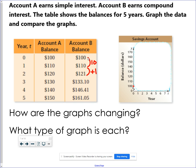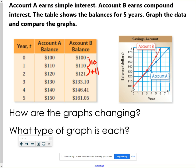This is adding 10, adding 11, clearly not linear. But here are my two graphs. Account A you can see is linear, Account B is curving. It says how are the graphs changing? So Account A is changing by the same amount all the time. Account B is increasing a little bit each time. That is just nonlinear. So what types of graphs do we have? Linear, nonlinear for those two.